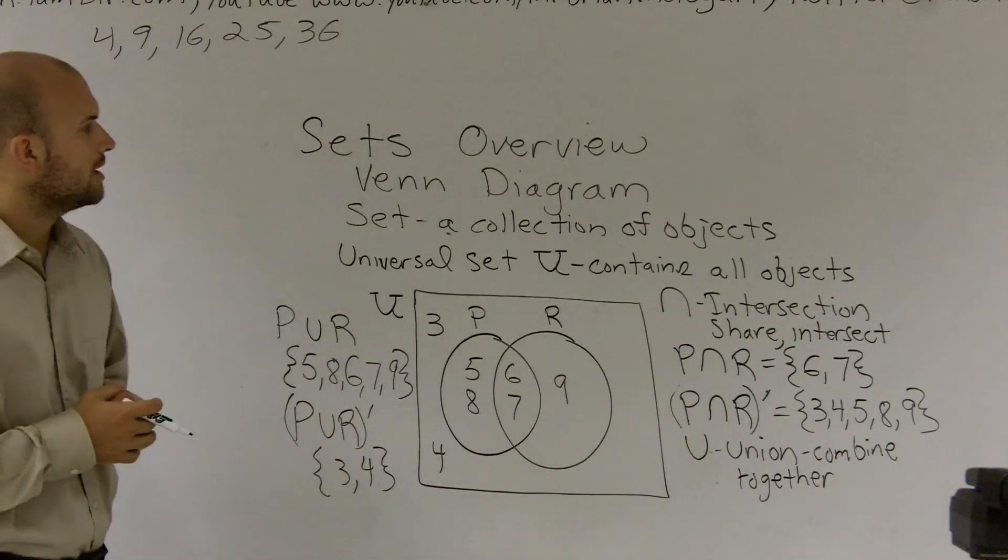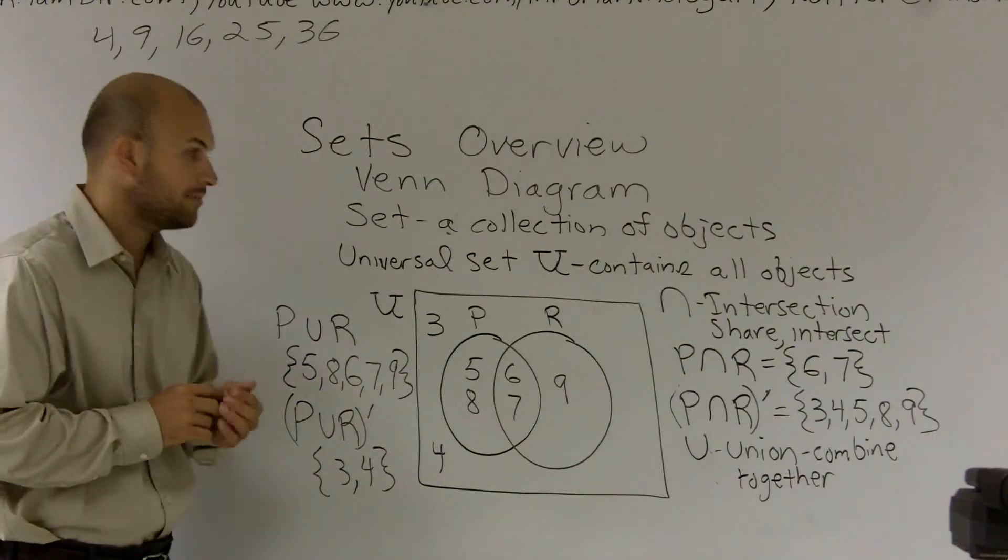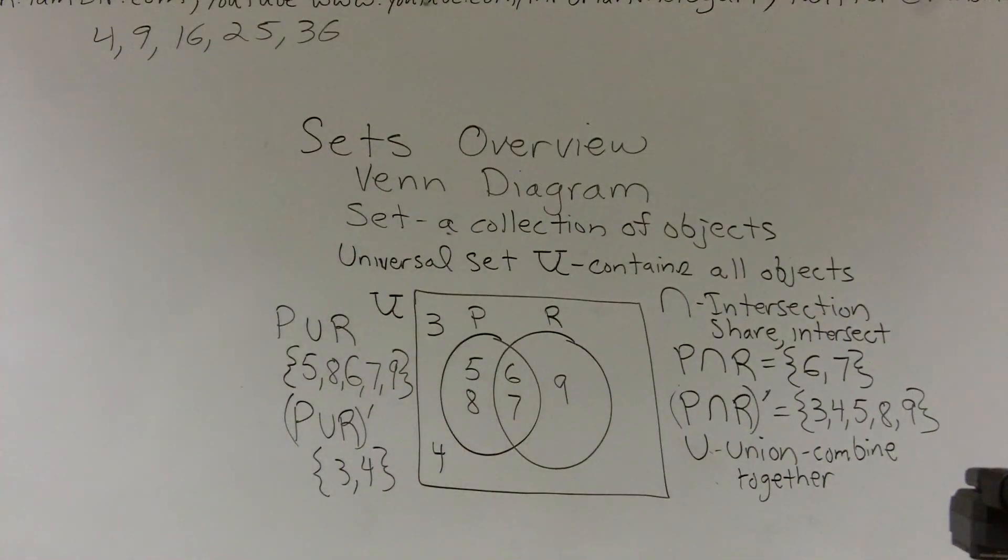So that's how you do a Venn diagram sets when dealing with intersection and union with the complement.